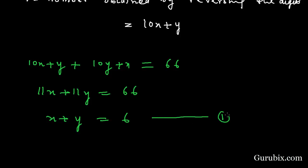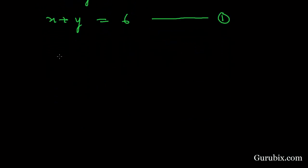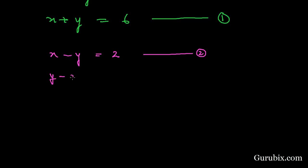We are also given that the digits of the number differ by 2. There are two possible conditions. If X is greater than Y, meaning the unit digit is greater than the tens digit, then X minus Y equals 2 — this is equation number 2. It may also be possible that Y is greater than X, meaning the tens digit is greater than the unit digit, giving Y minus X equals 2 — this is equation number 3.